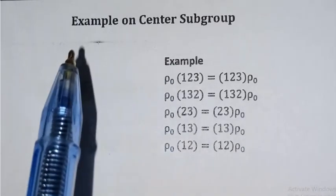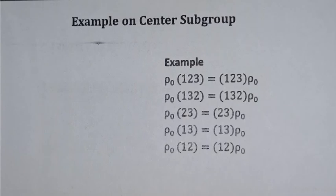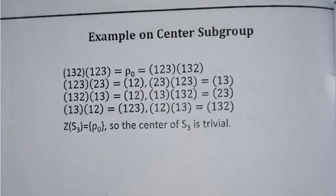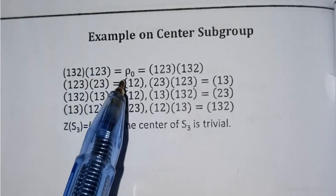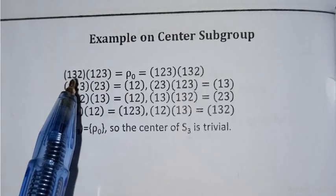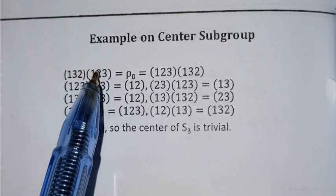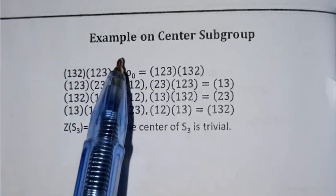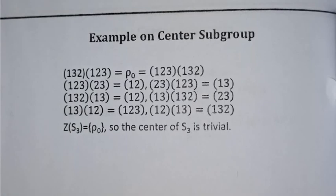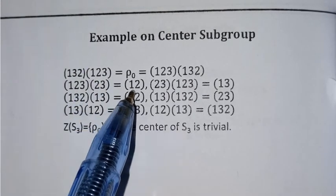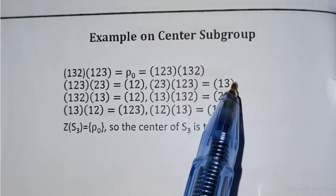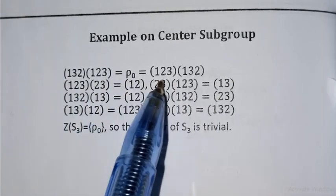The identity permutation ρ₀ belongs to Z(S3) because the commutative law holds with each element. However, when we check other permutations — such as (1 3 2) or (2 3) — and multiply from left versus right, we get different results. For example, applying (2 3) and checking commutativity gives (1 2) on one side and (1 3) on the other, so the commutative law does not hold.